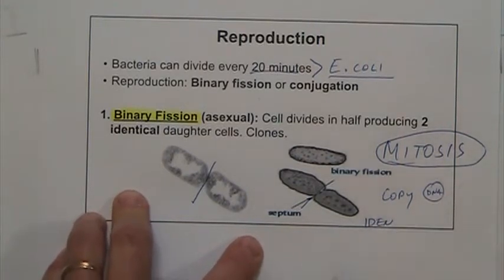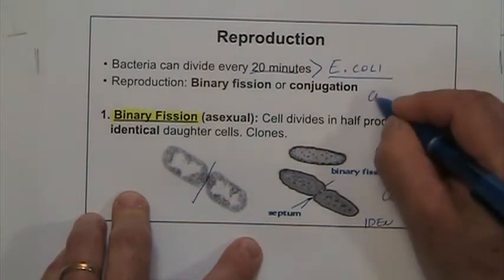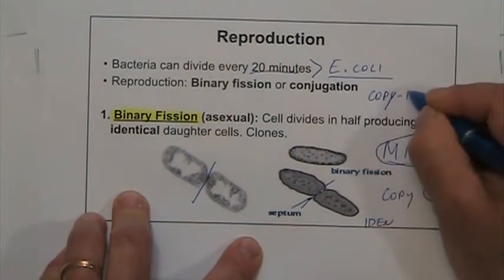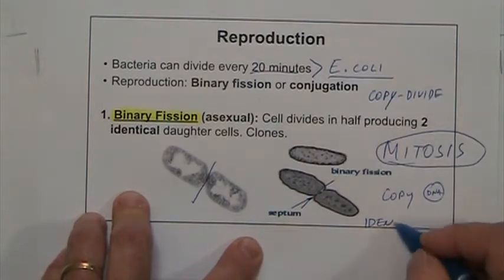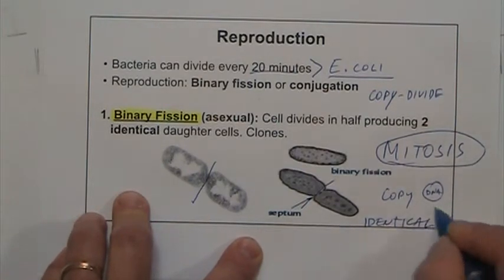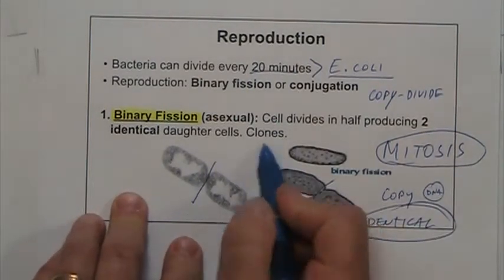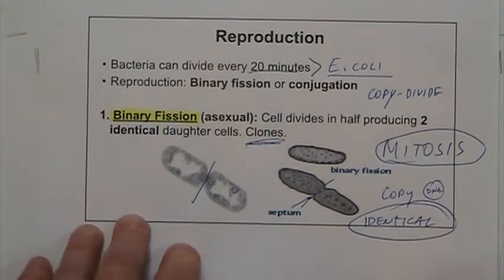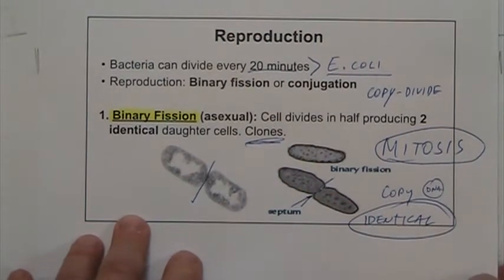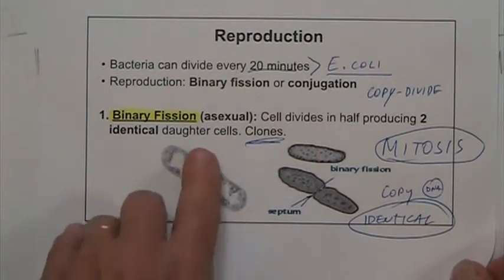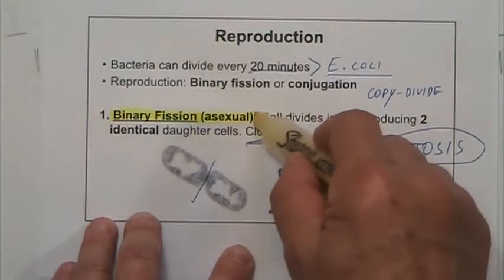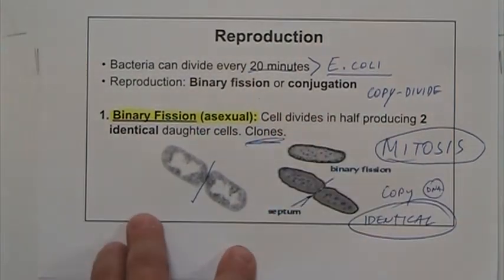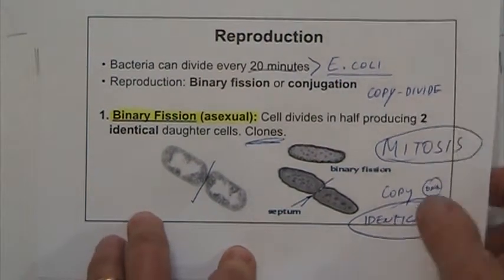Since binary fission is just copy and divide, both cells are identical — they are technically clones. This type of asexual reproduction involves the same process: copy and divide.